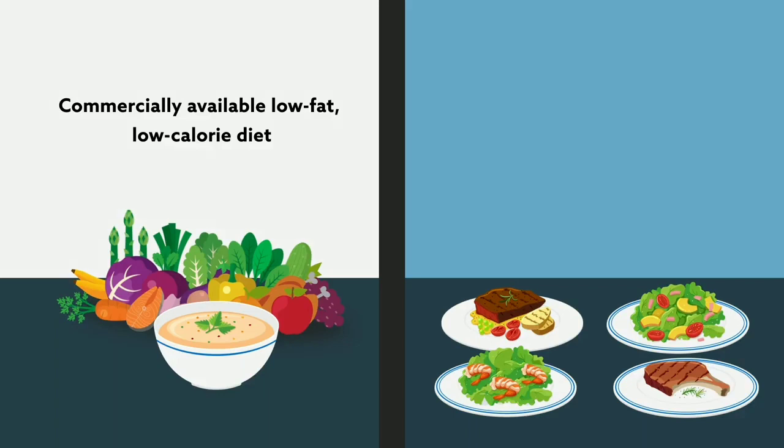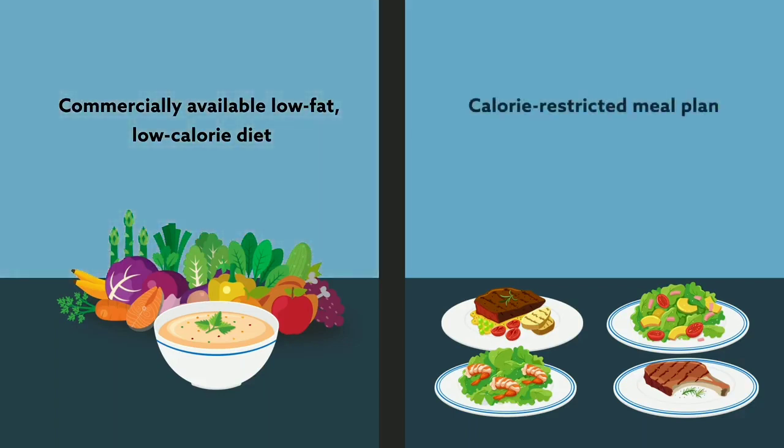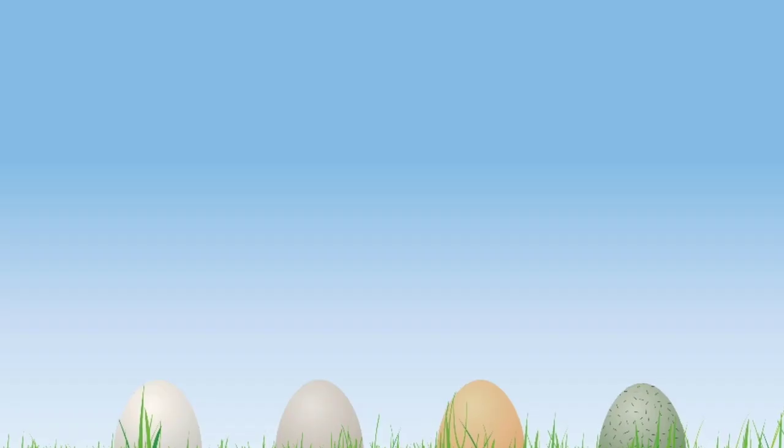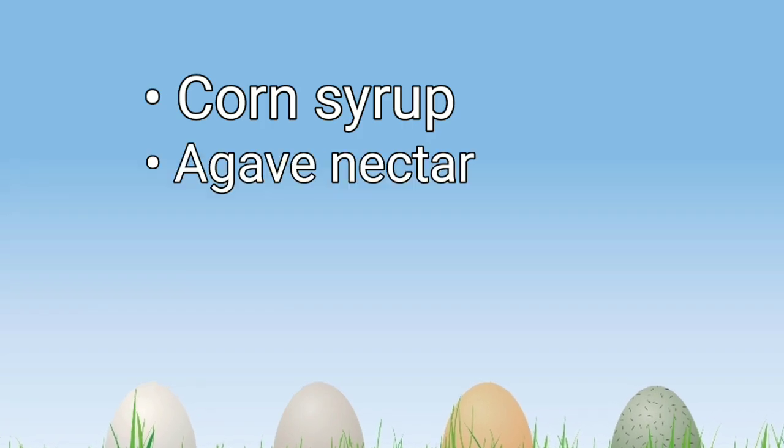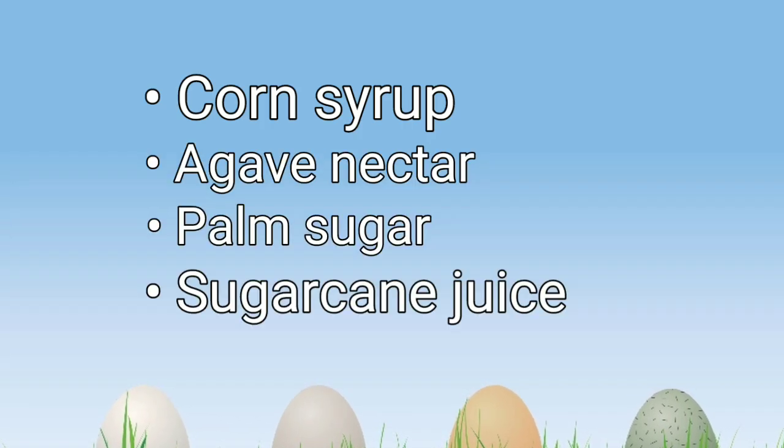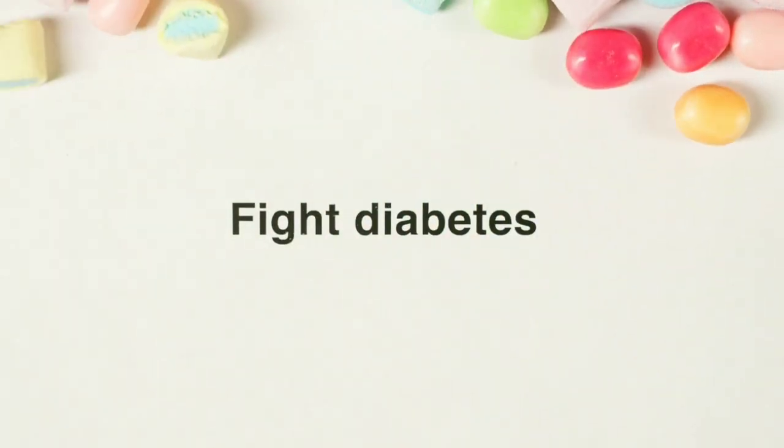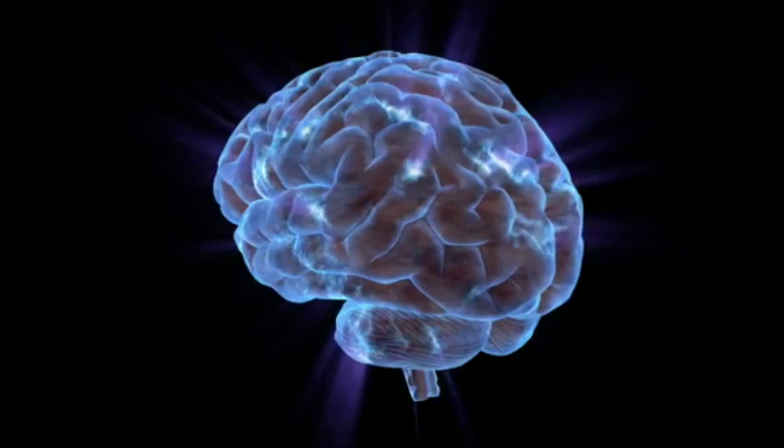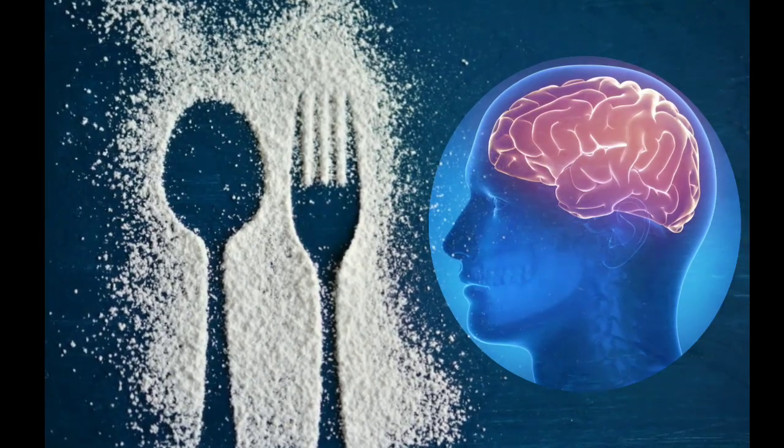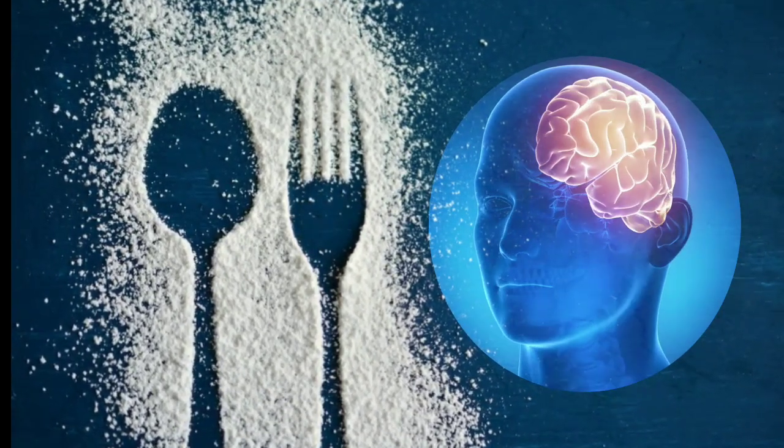Refined sugars can be hard to spot on nutritional labels since they can be listed under a number of names, such as corn syrup, agave nectar, palm sugar, sugar cane juice, or sucrose. No matter what it's called, sugar is sugar, and in excess, it can negatively affect your body in many ways. Here in this video, we will try to find how sugar affects your body.